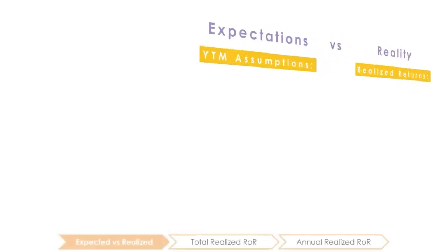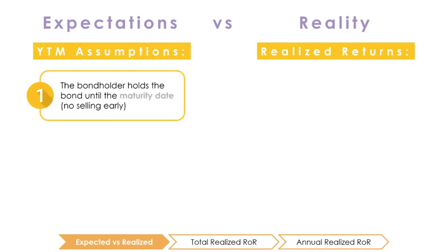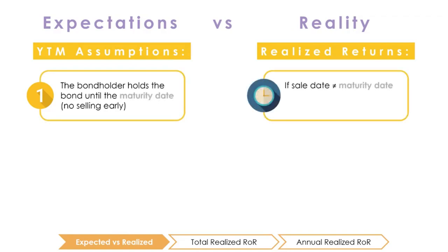The yield to maturity makes three assumptions that don't always hold up in reality. First, it assumes that you hold the bond until maturity. If you don't hold the bond until maturity, changes in market interest rates may affect the market price of the bond, causing you to earn more or less when you sell the bond compared to receiving the full face value if you hold until maturity. There may be an additional capital gain or loss beyond what was baked into the investment at issuance via premiums or discounts.